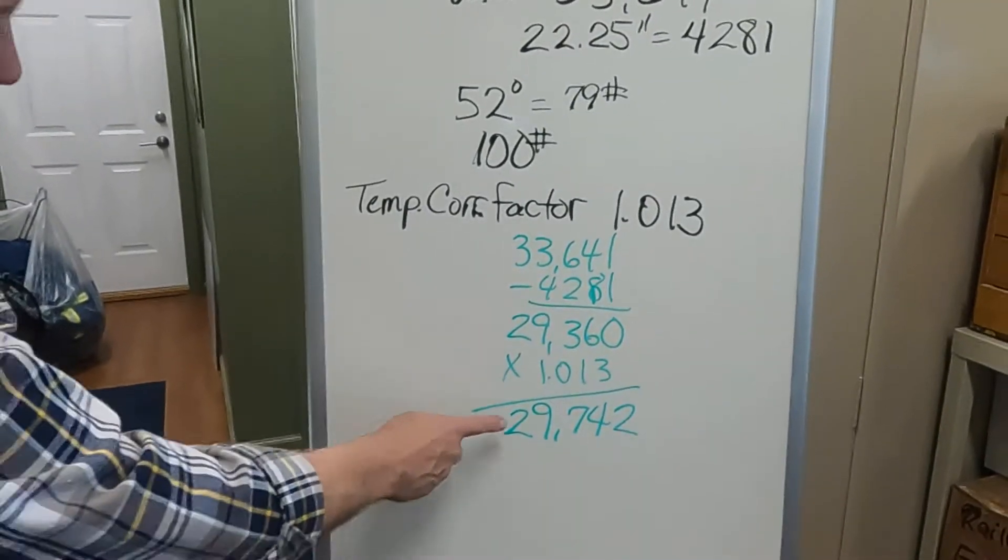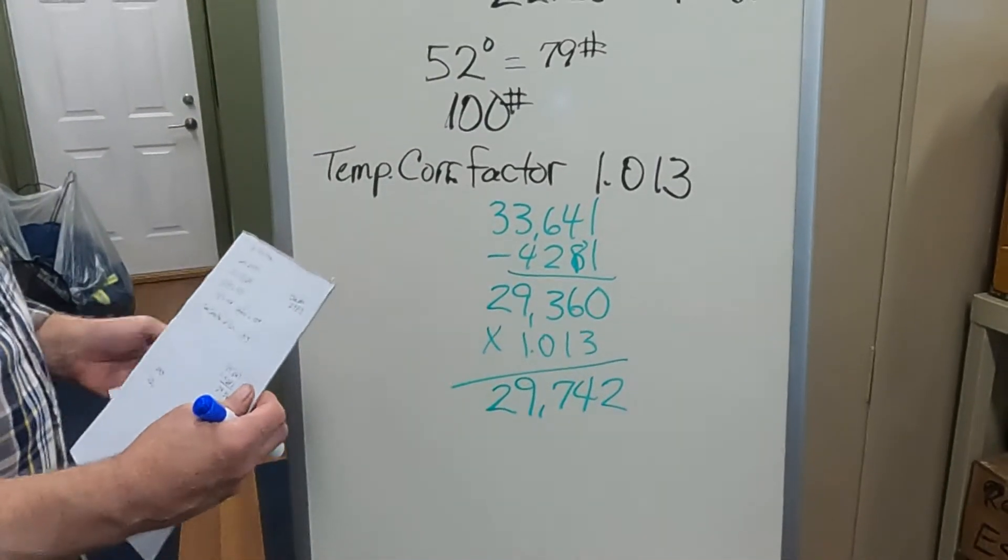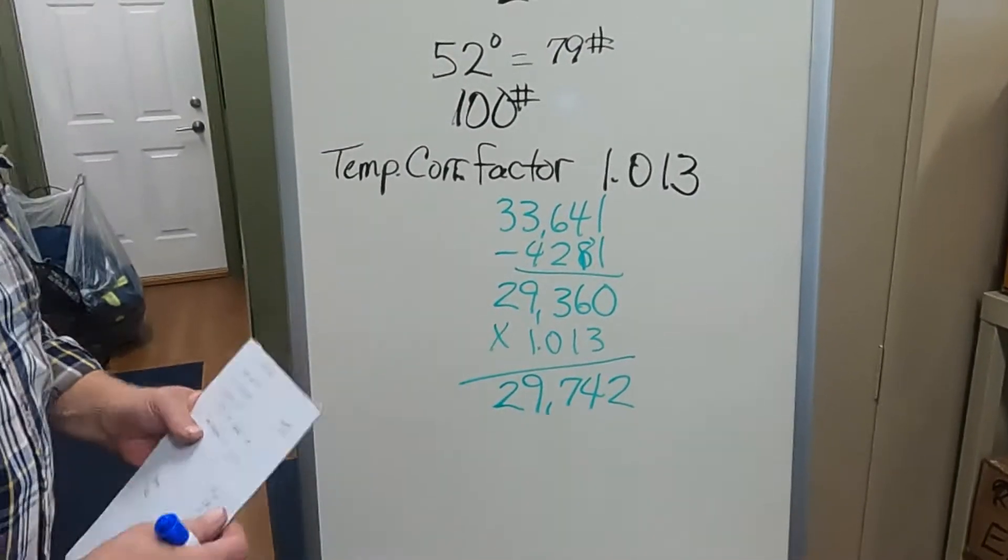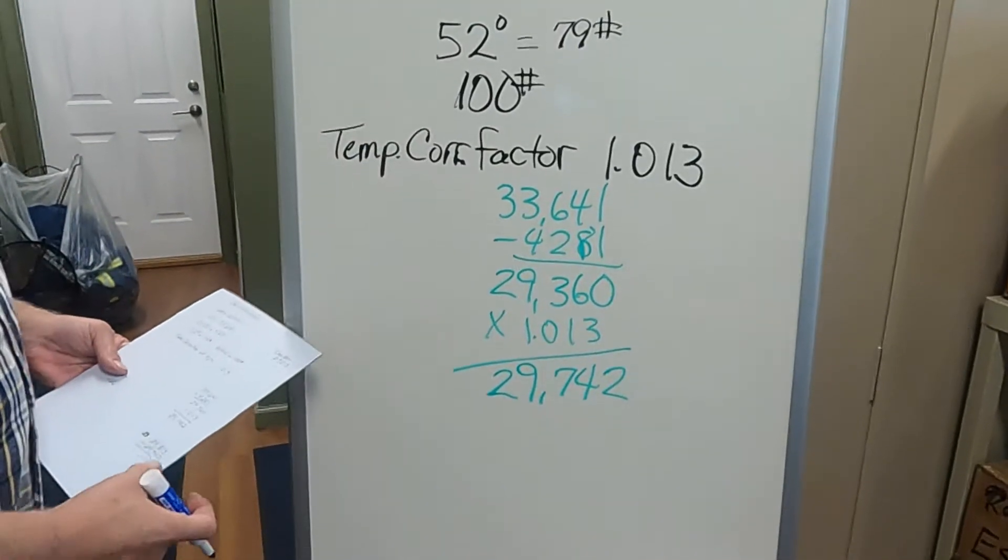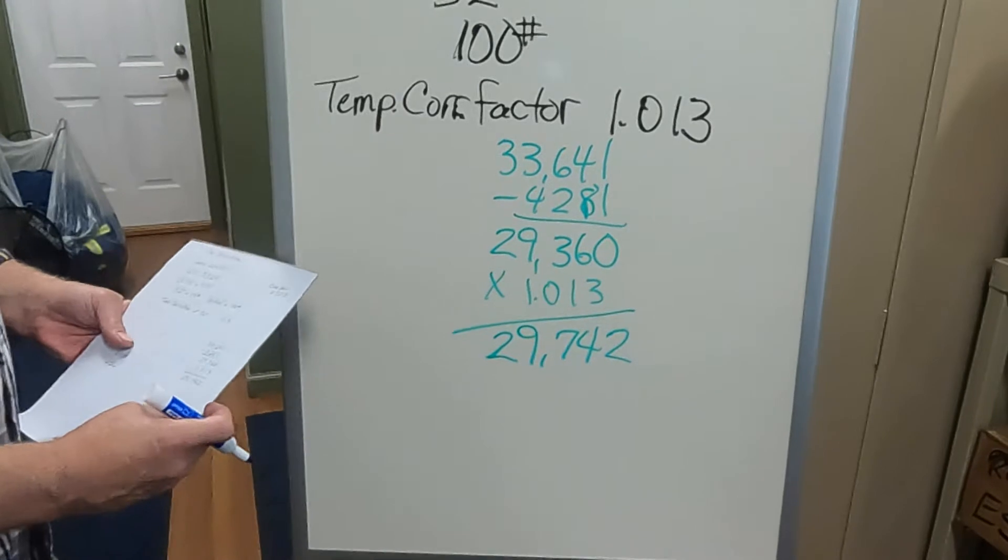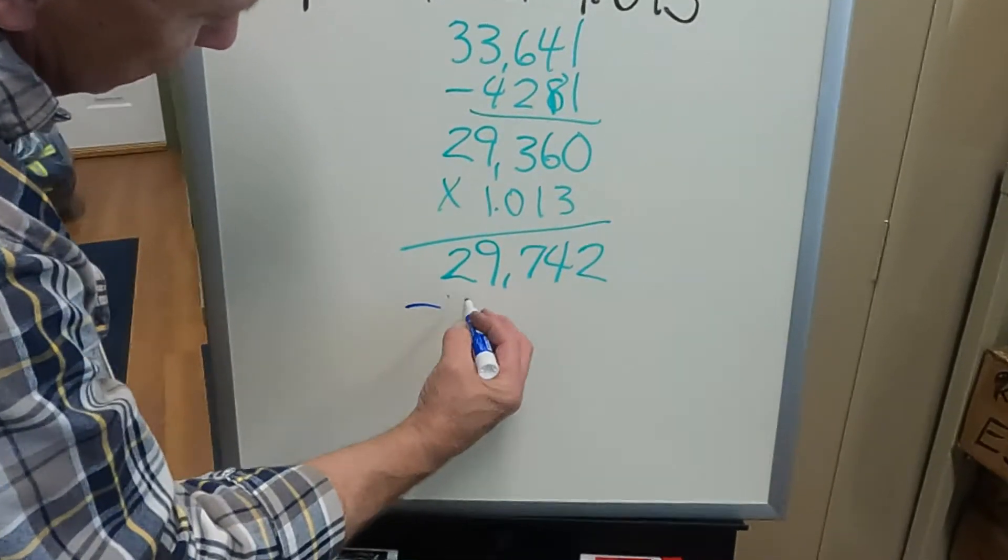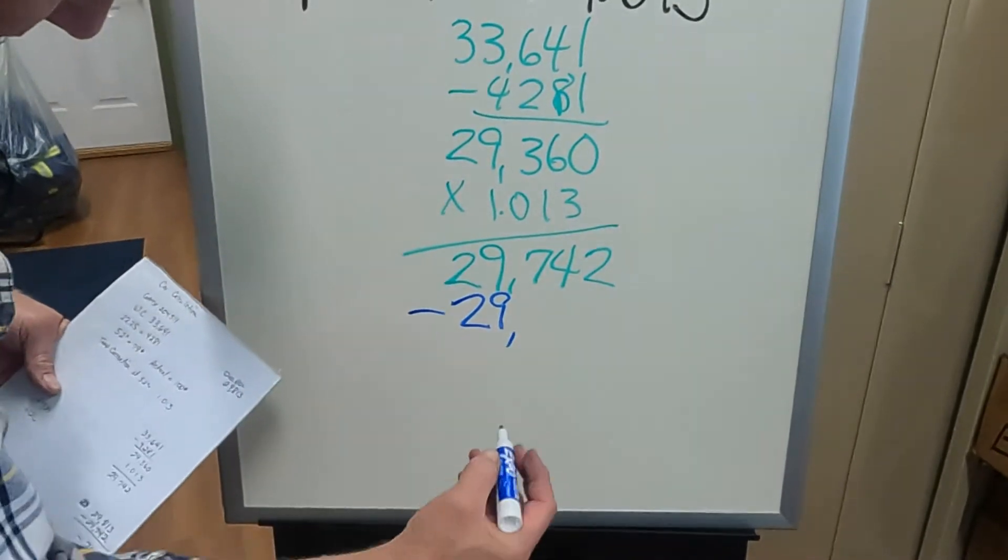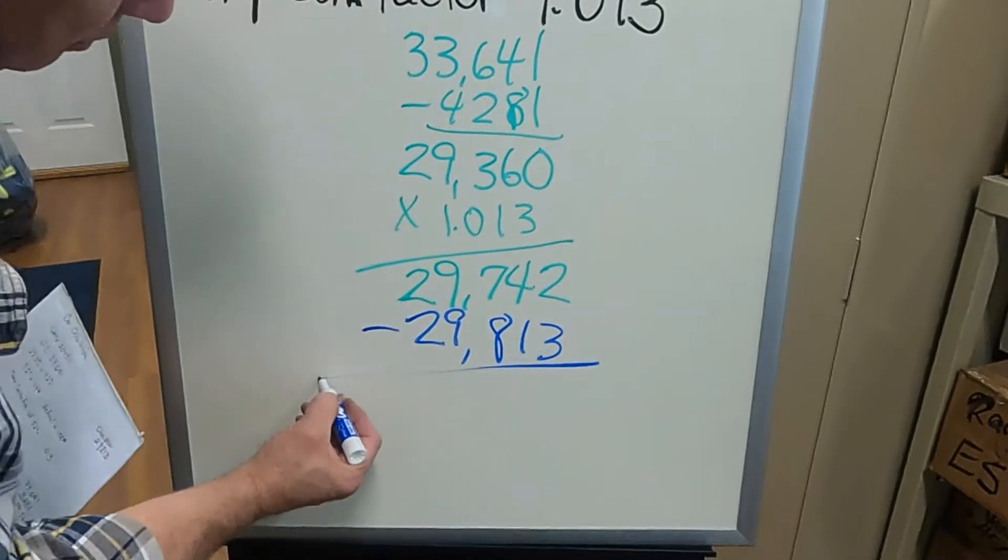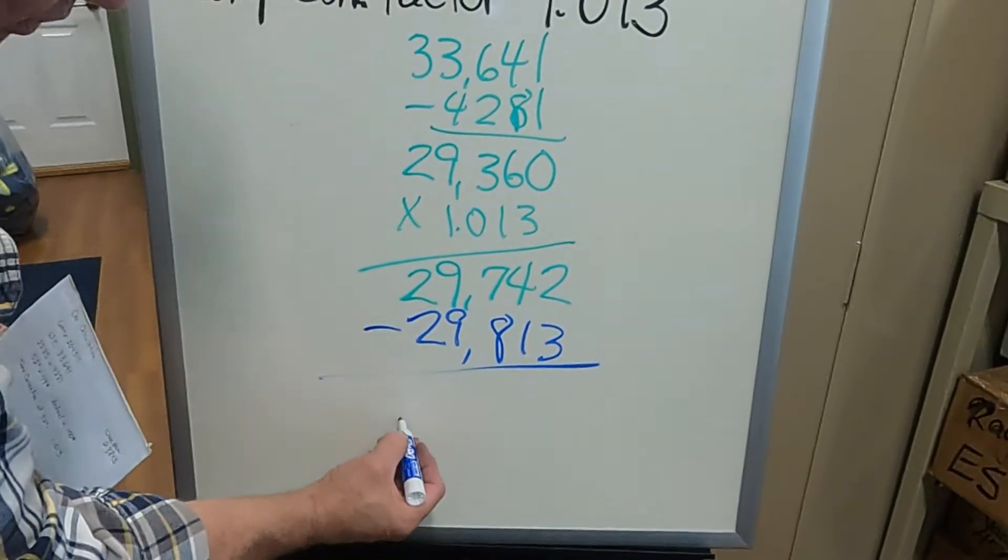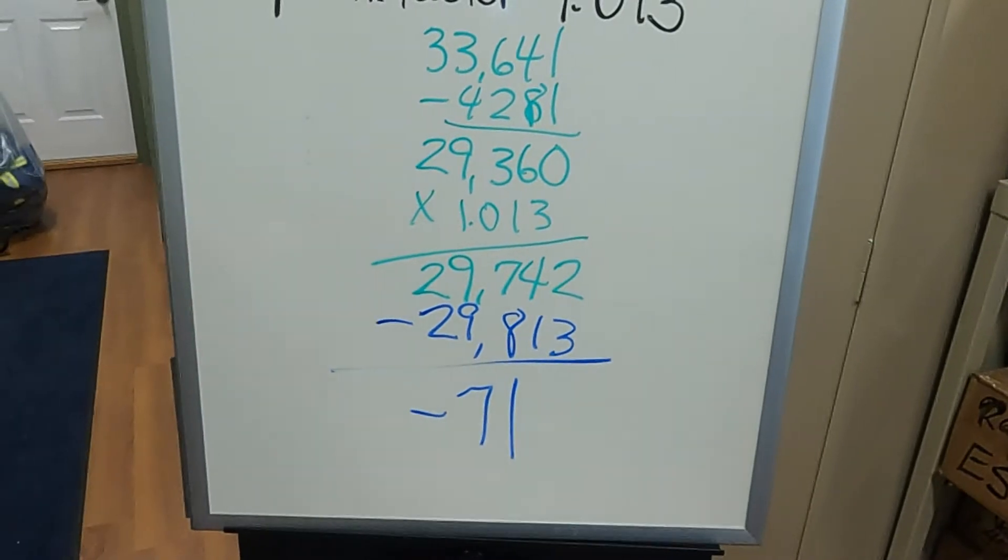Now that we have that number, we go to the next number. What did that refinery say that we had on our BOL? They declared our net gallons to be 29,000. So we're going to minus 29,813. So we have a loss of 71 gallons.